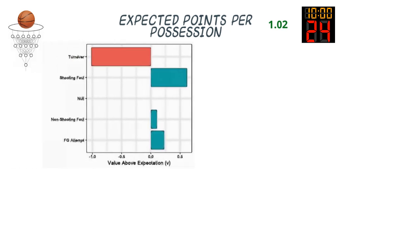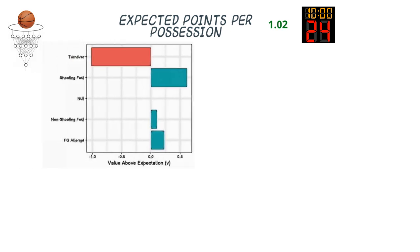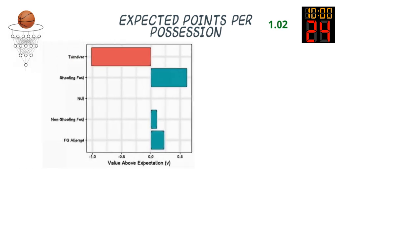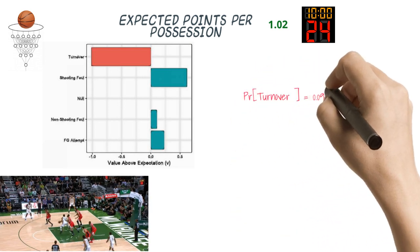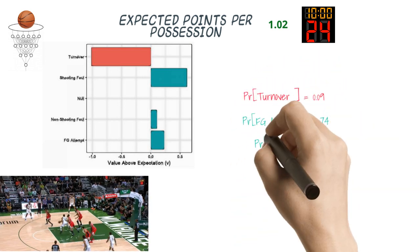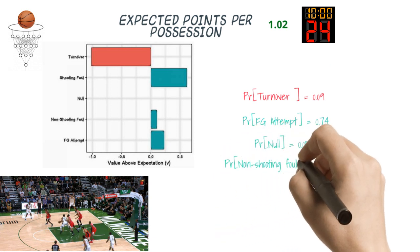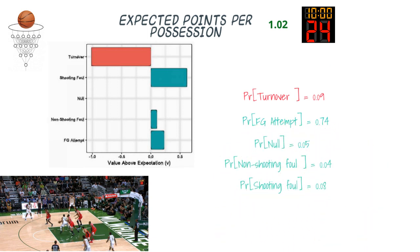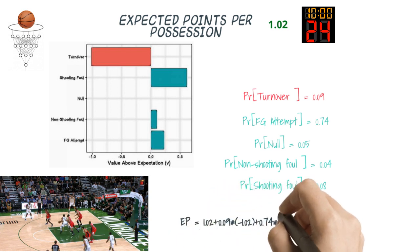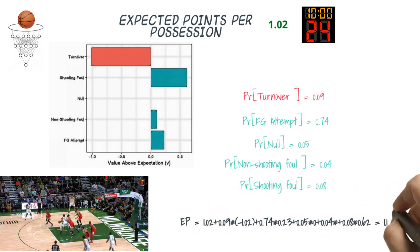The expected points per possession is 1.02. During a possession, this number changes depending on the probability of each terminal action. Every action is associated with a point value above expectation that is obtained through the data. Let's consider the following snapshot: Deep Hoops outputs the probability of each terminal action occurring within the next half-second.